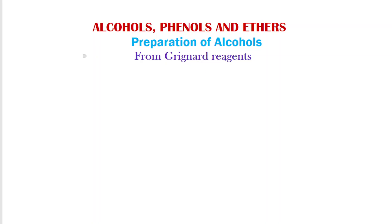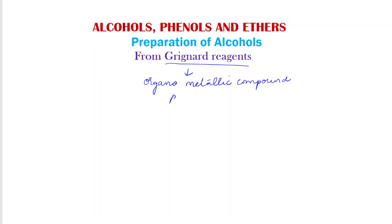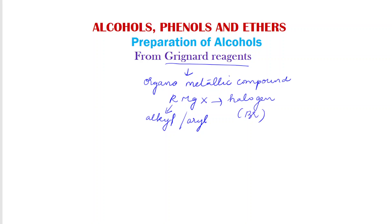Here we are going to prepare alcohol from Grignard reagents. What is a Grignard reagent? It is nothing but an organometallic compound. The general formula for this Grignard reagent is RMgX, where R is an alkyl or an aryl group, and X is a halogen. Most of the time we use Br as X.